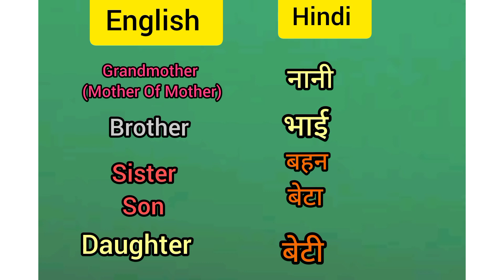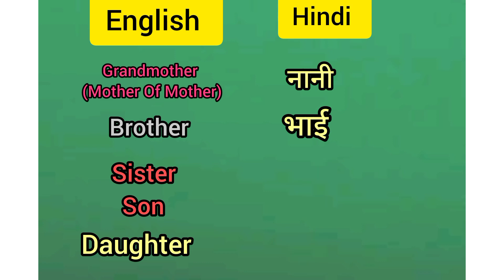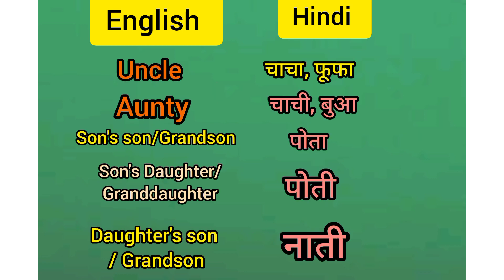Son — Beta. Daughter — Beti. Uncle — Chacha or Phupa. Auntie — Chachi or Boa.